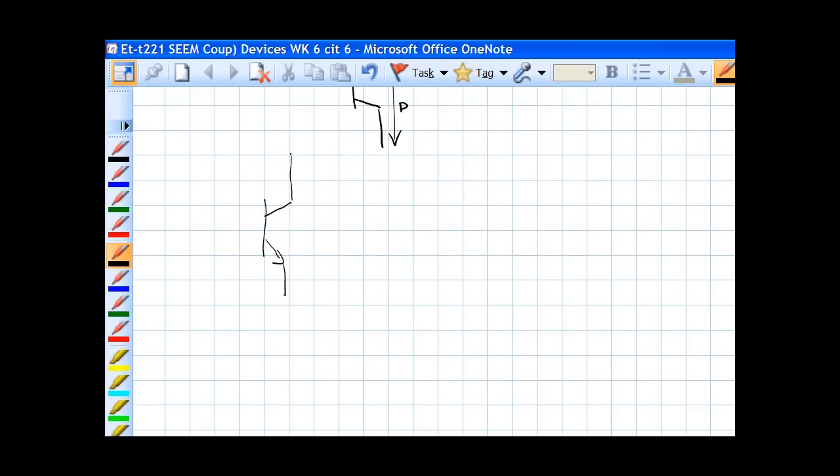We're going to stick with NPN first. Direction of current flow is this way in the same direction as the arrow. Current from the base would be this way also, same direction as the arrow. A lot of times, we'll put a circle around this and call it a transistor in a schematic.